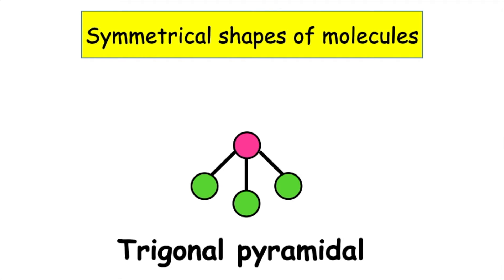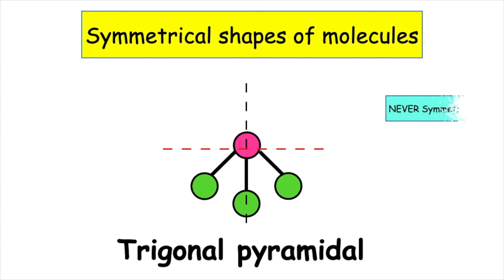Shape number three is trigonal pyramidal. There is no line of symmetry across the x-axis, and because of this, shape number three — trigonal pyramidal — is never symmetrical.